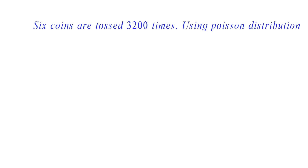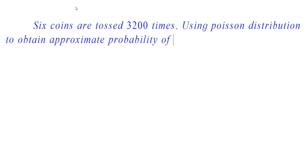Hello friends, in this section we learn to solve problems in Poisson distribution. Here the question is: 6 coins are tossed 3200 times. Using Poisson distribution to obtain the approximate probability of getting 6 heads x times.